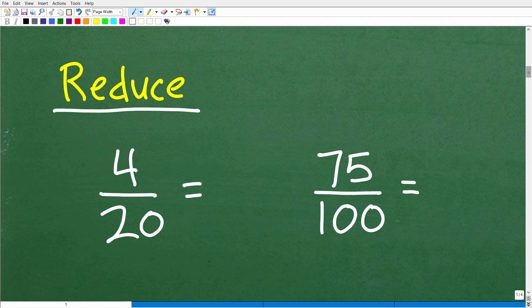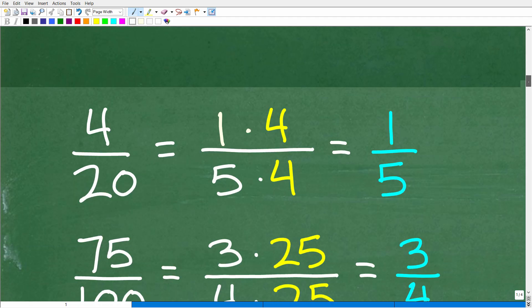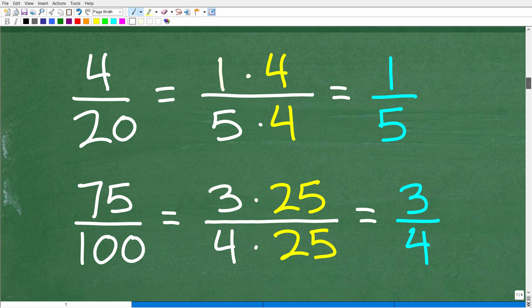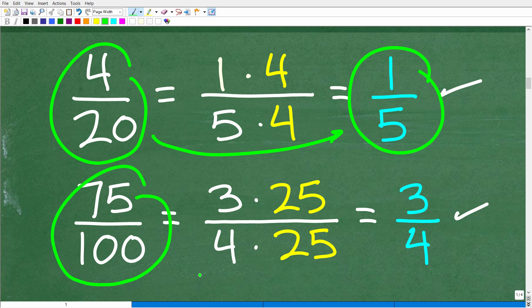Anytime you're dealing with fractions or anything in math, you always want to think: have I written my answer in its simplest form? That's really important. Let's take a look at the answers here. So the answers are the following. For four over twenty, the correct answer is one fifth, and seventy-five over one hundred, the correct answer is three fourths.